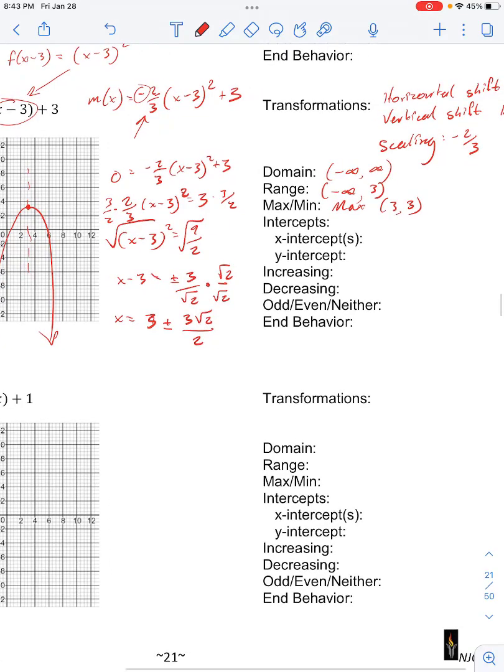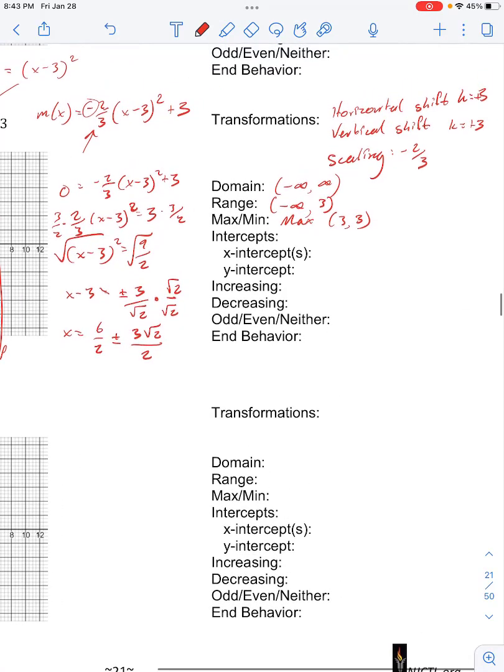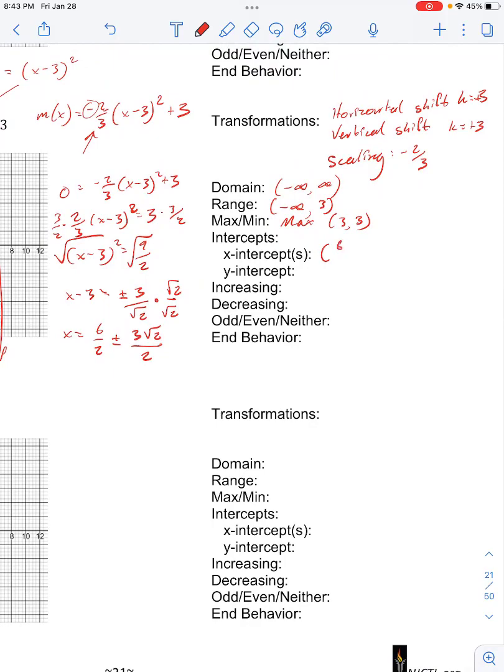We can combine this even further. So that 3 becomes 6 over 2. So we have one x-intercept at 6 plus 3 squared root of 2 over 2, 0. And another x-intercept at 6 minus 3 squared root of 2 over 2, 0.